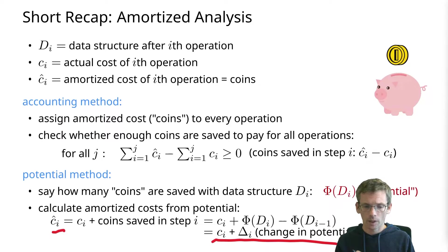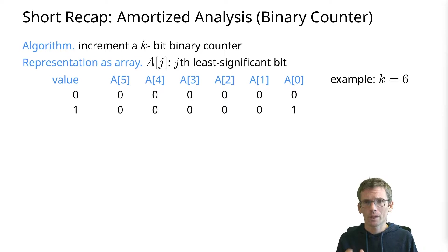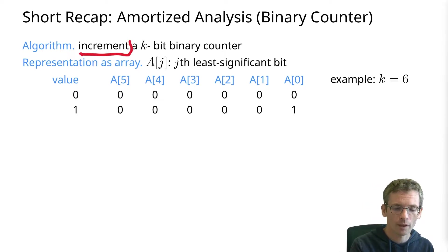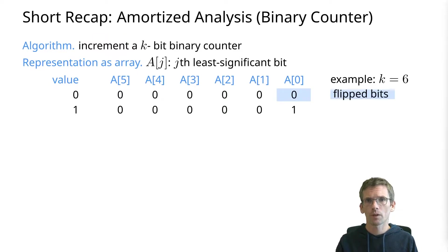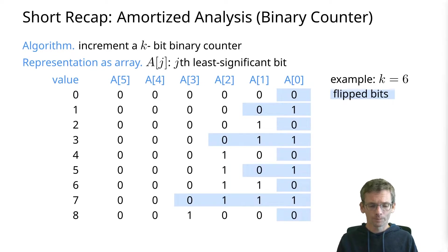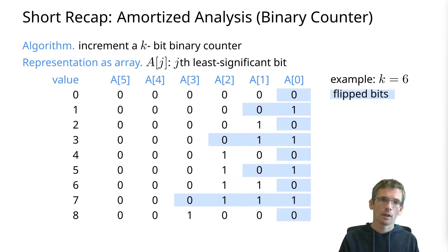Let's look at the example of the binary counter. We store it in an array with zero being the least significant bit. Here we see an encoding of zero and of one. In a binary counter we have one operation: increment. The first increment costs one bit flip, so it costs one. The next one, going from one to two, we have to flip the first two bits, so that has a cost of two. Going from seven to eight, for instance, we need to flip four bits. So this is not constant in terms of how many bits we need to flip in one step, but amortized we can see that the amortized cost for an increment is actually constant.